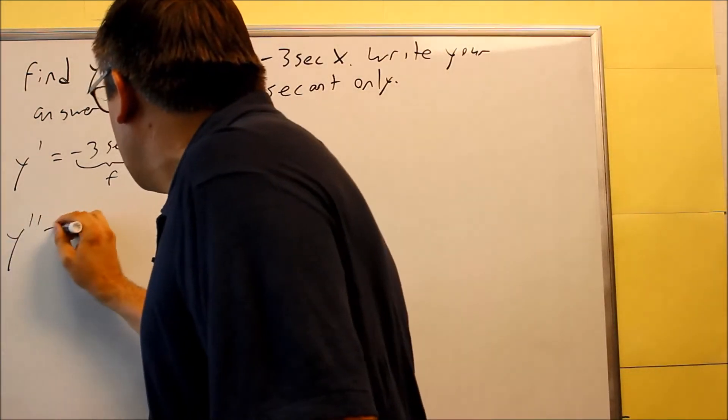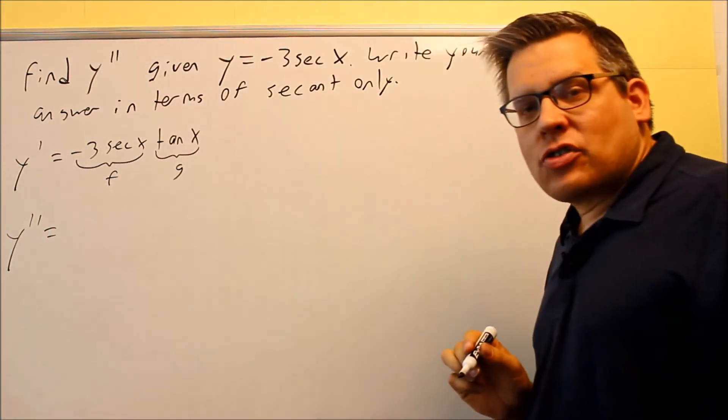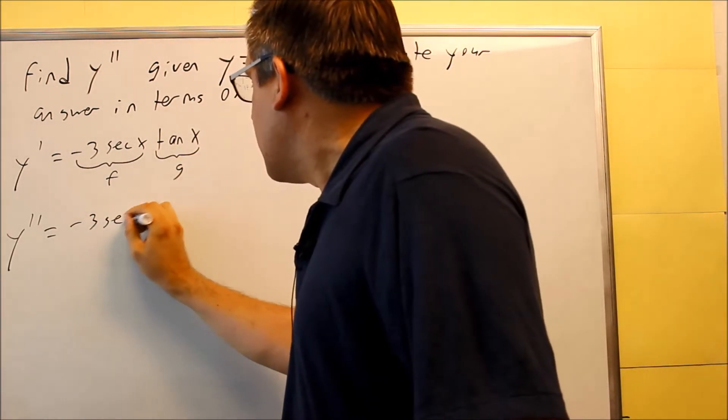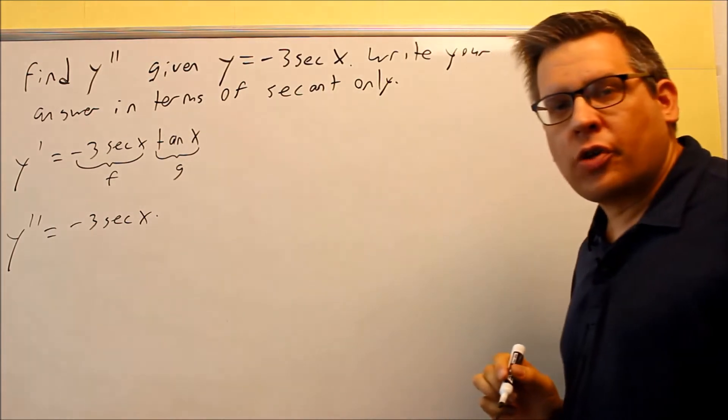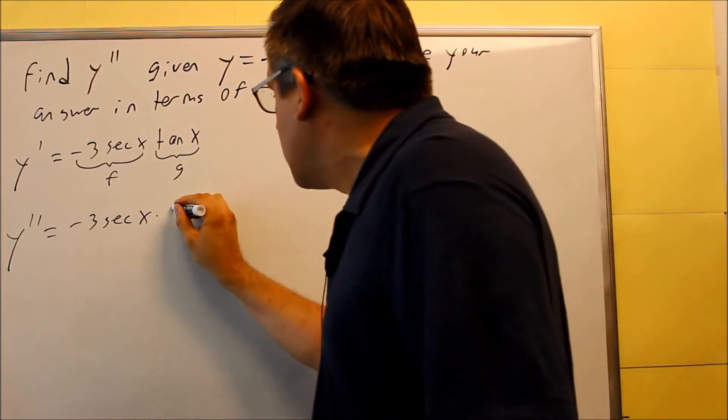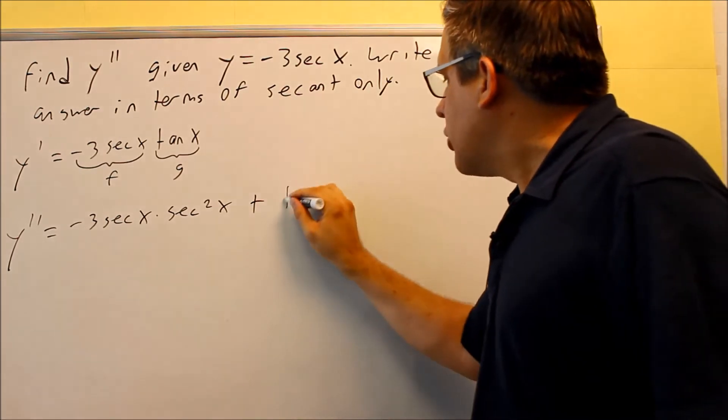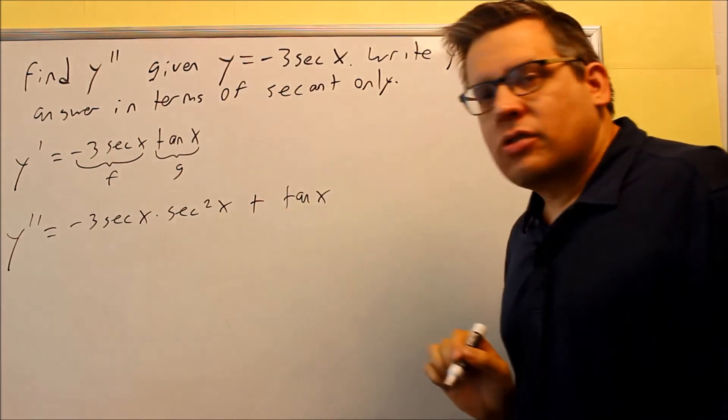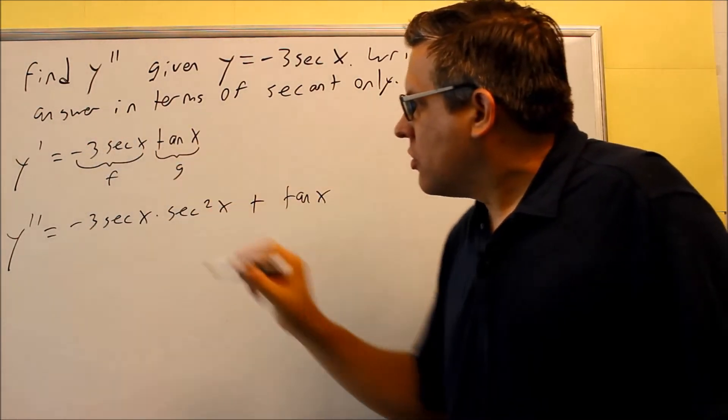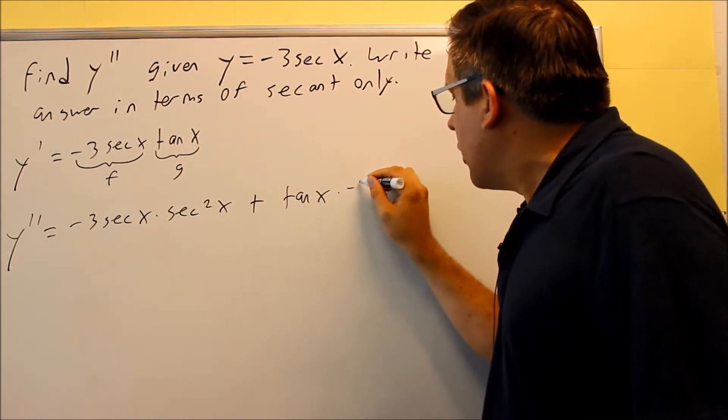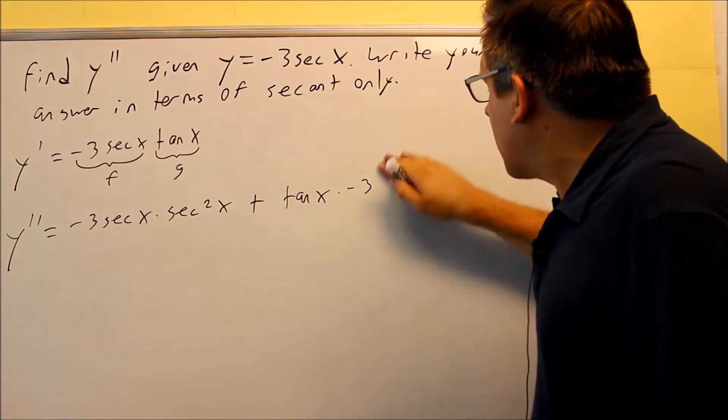So if I do that, my first term is f. The way the product rule works is you take the first term, negative 3 secant x, the derivative of the second, derivative of tangent is secant squared x. Plus the second thing, which is tangent x, derivative of the first. So the derivative of negative 3 secant x. We saw that already. Negative 3 secant x tangent x.